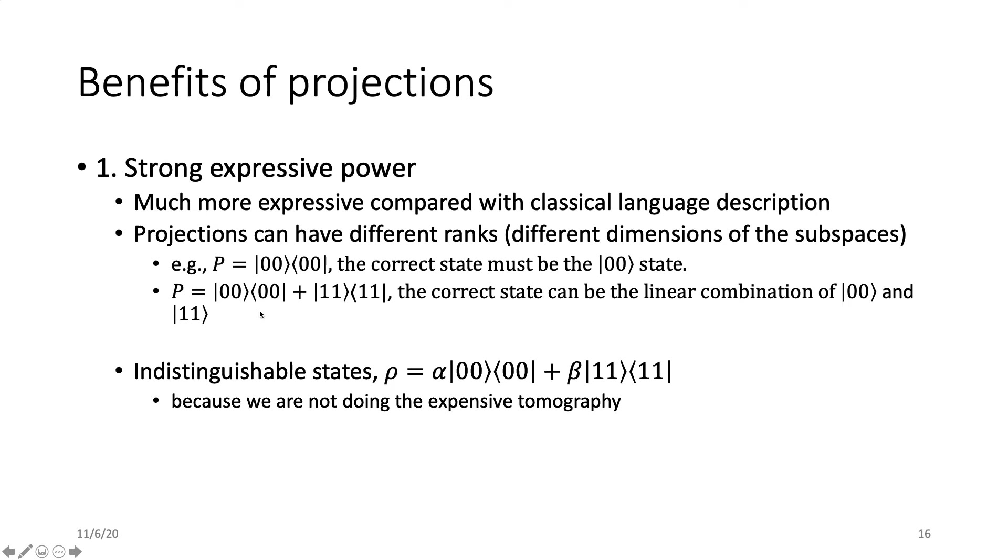On the other hand, we must notice that the projections cannot accurately specify all possible states. For example, these states with different values alpha and beta are not distinguishable in the sense of projections because their subspace will always be this |00⟩ + |11⟩ subspace. This is because we are not doing the extensive tomography. But later we will see that selecting projections allows more efficient checking.